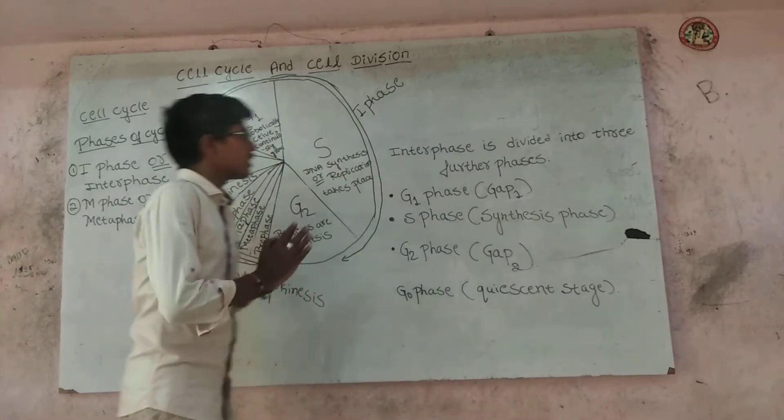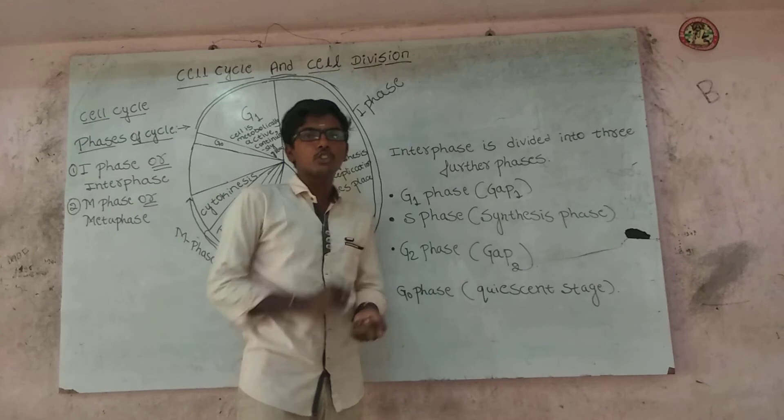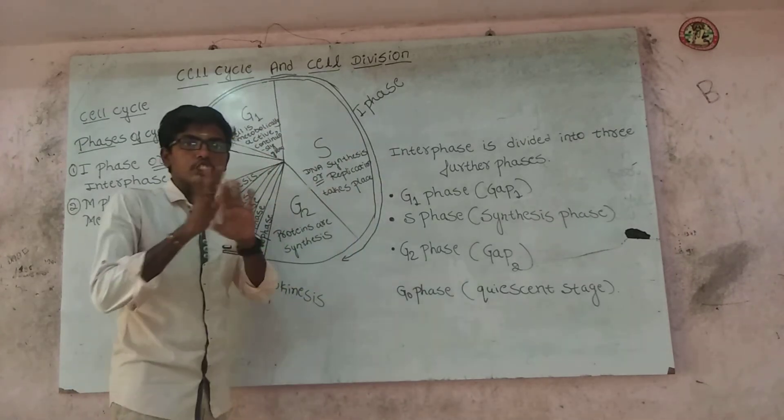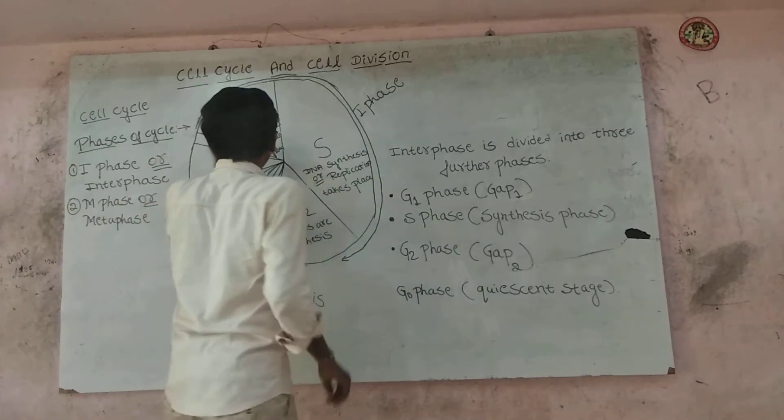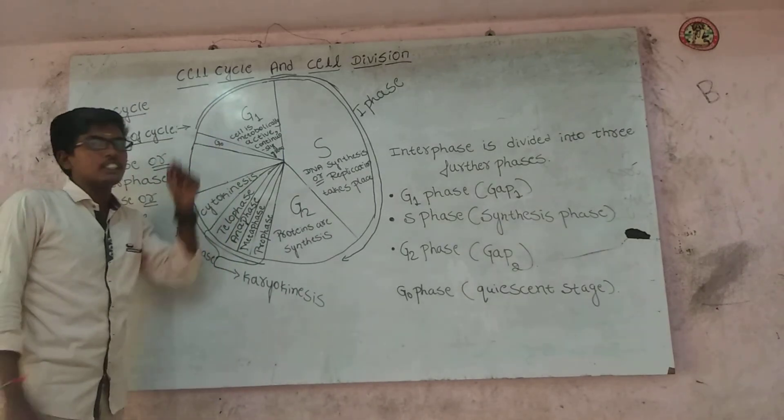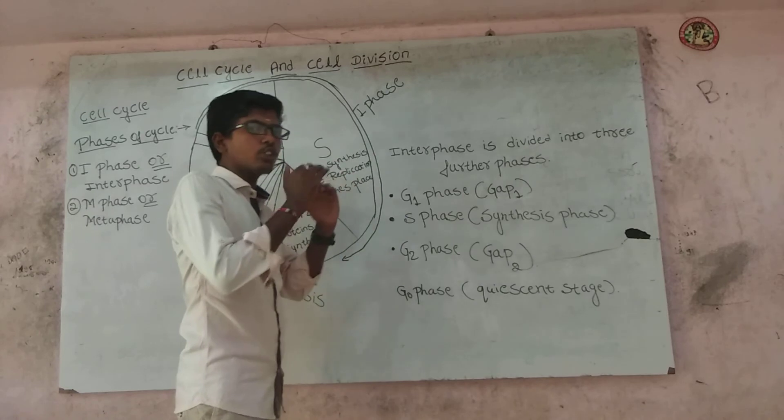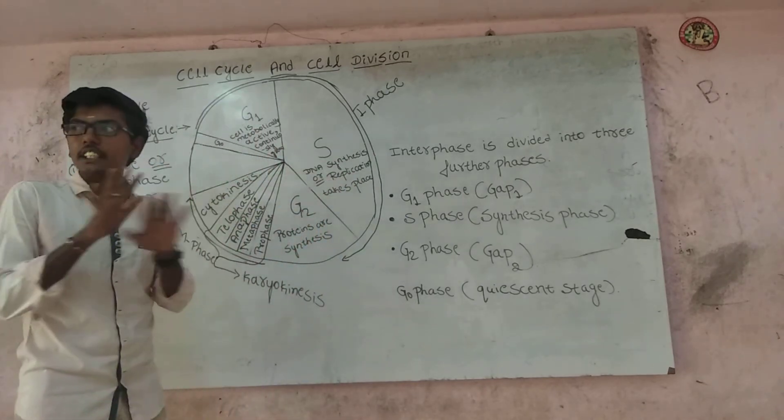During G1 phase, the cell is metabolically active and continuously grows, but it does not replicate DNA.